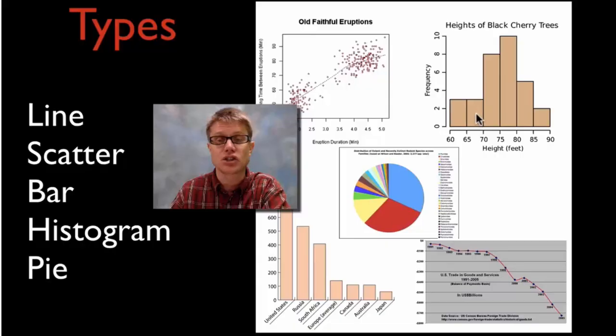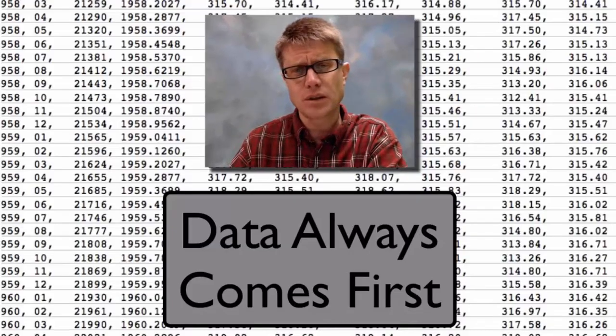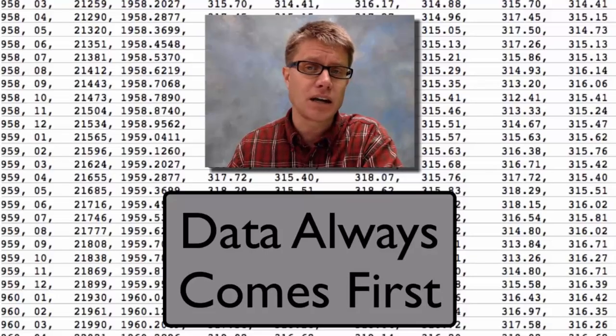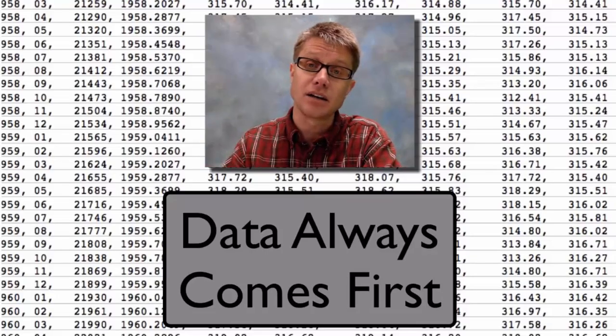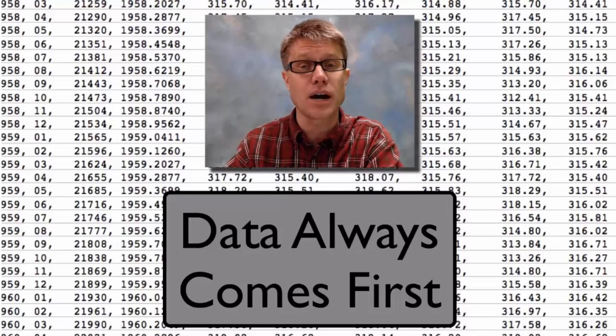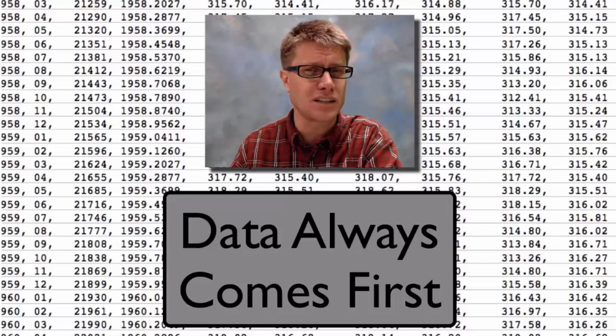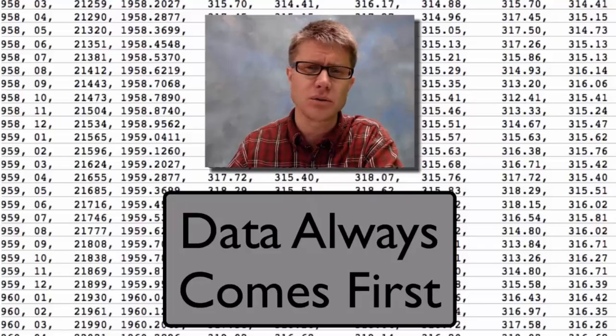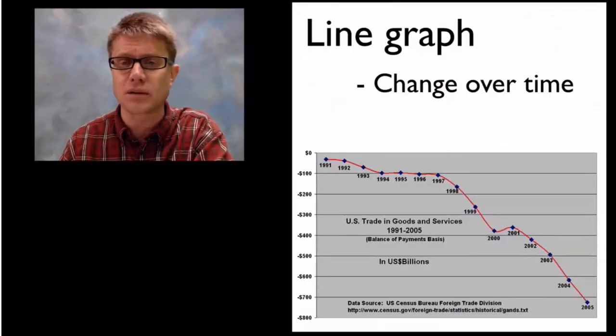The reason it's important that you know and can identify the different graph types is that as a scientist you're going to collect data and then you're going to have to choose what graph you're going to use. In other words the data always comes first and then you've got to figure out what graph you're going to use. So let's talk about five different types of graphs.